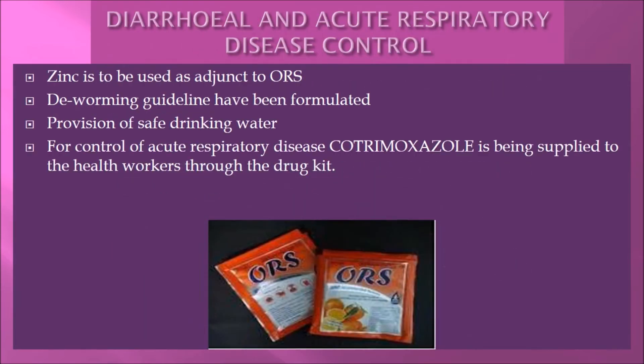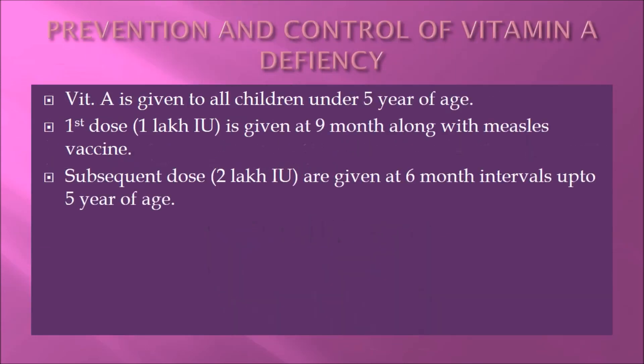For control of acute respiratory disease, deworming guidelines have been formulated, provision of safe drinking water is emphasized, and cotrimoxazole is being supplied to health workers through the drug kit, to be used as an adjunct to ORS.